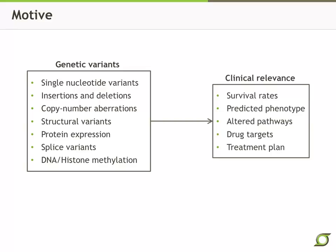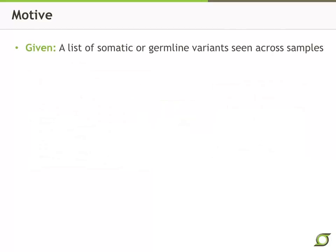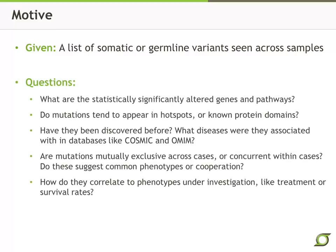This kind of translational research is where MuSiC tries to fit in. So given a list of somatic or germline variants seen across samples, these are just a few of the questions that the tools in MuSiC try to answer, and tools released in future updates of MuSiC will try to answer many more such questions.